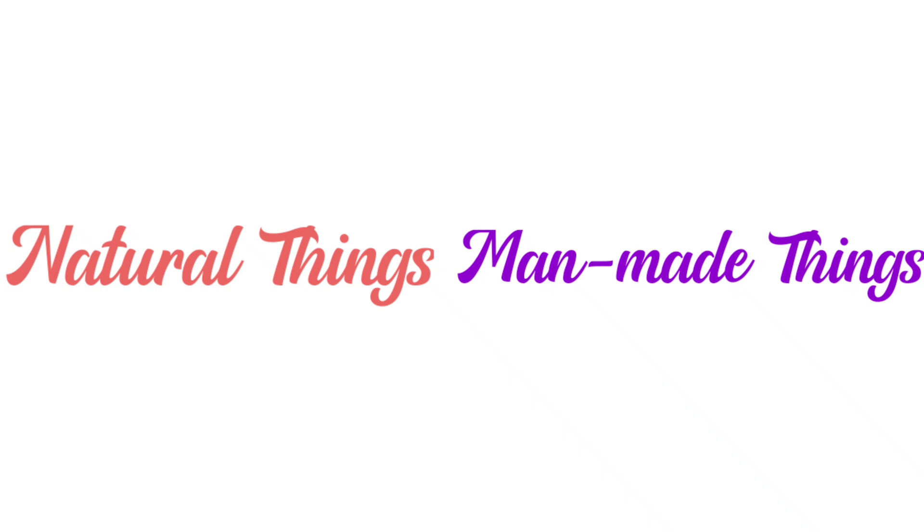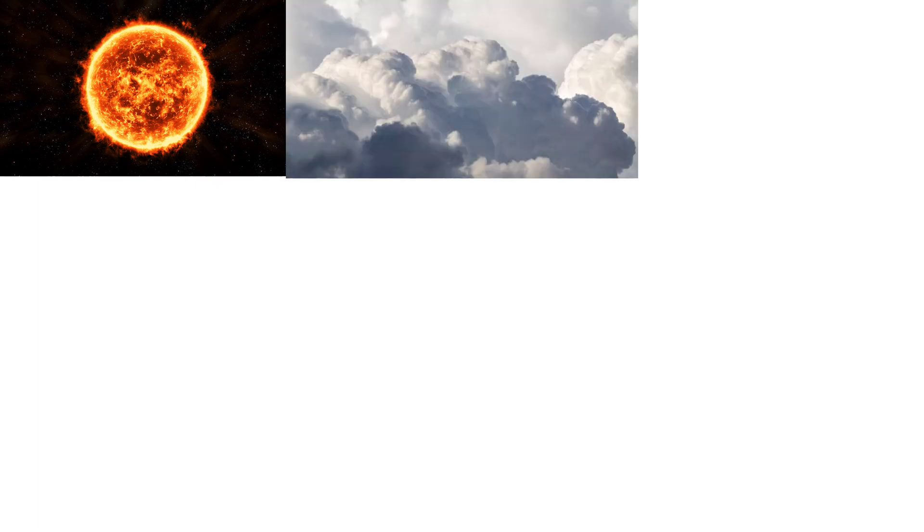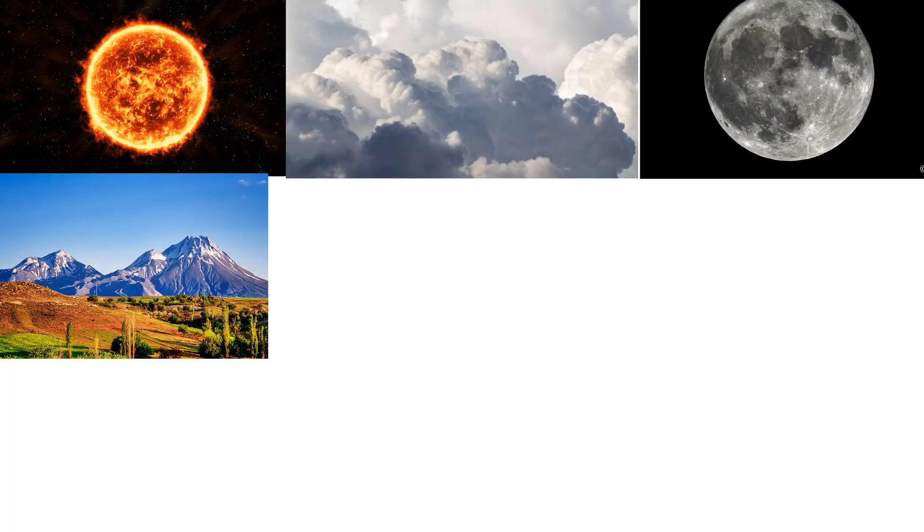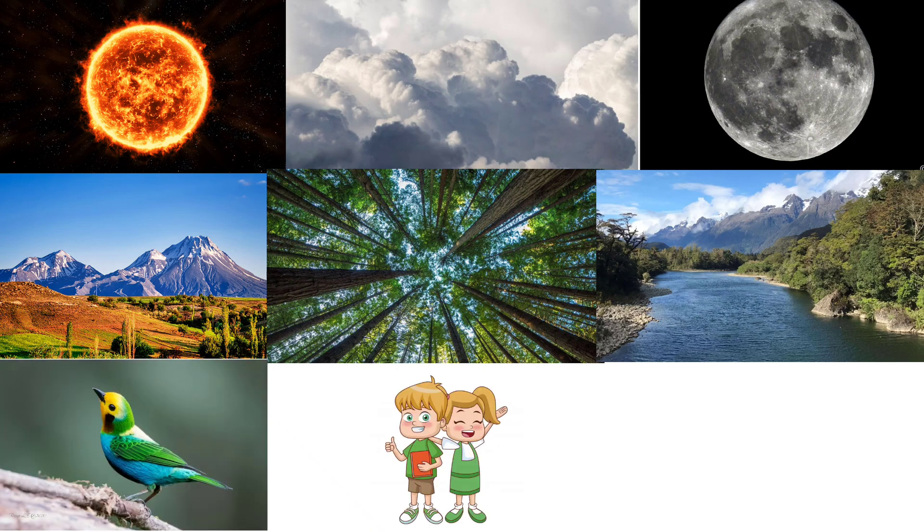Children, what are natural things? Things created by nature are called natural things, like sun, clouds, moon, mountain, trees, river, birds, humans, animals.